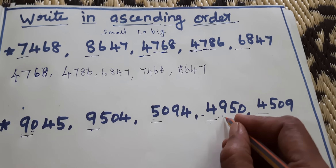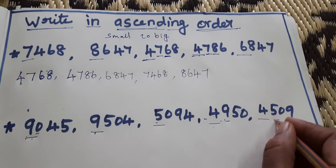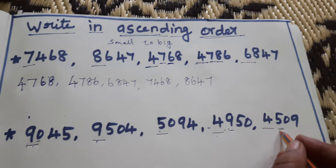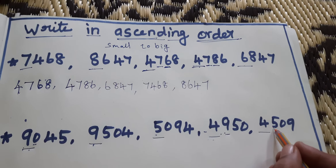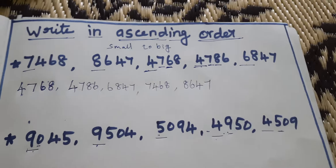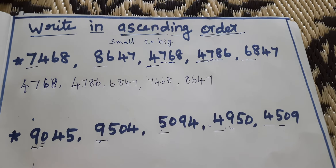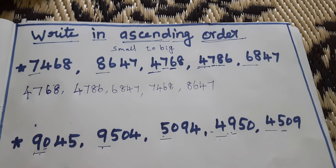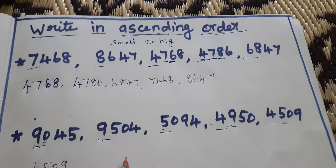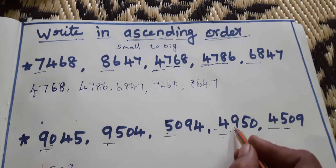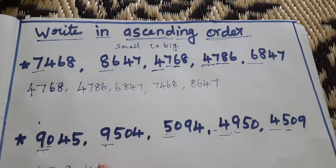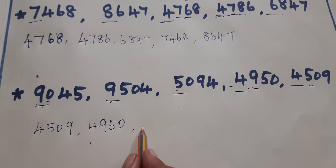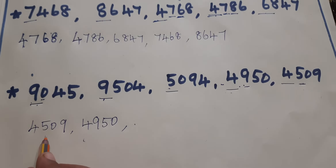Next, the hundreds place: 900 or 500? Which one is small? 500 is the small number. So 4509 is first. Then 4950 is next — ascending order, small to big.